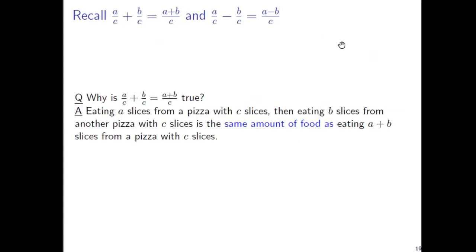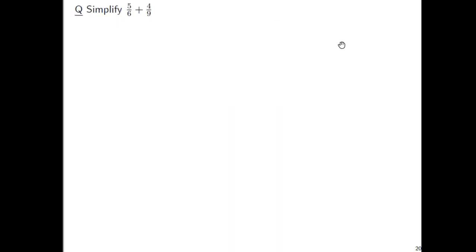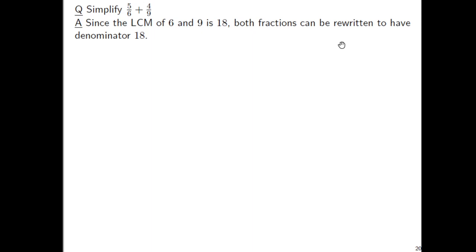The fraction addition rule is true because eating A slices from a pizza with C total slices, and then eating B slices from another pizza that also has C total slices, is the same as eating A plus B slices from a pizza with C slices. As review: 5/6 plus 4/9 — the LCM of 6 and 9 is 18.